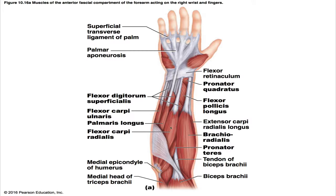The flexor carpi radialis runs diagonally across the forearm; midway, its fleshy belly is replaced by a flat tendon that becomes cord-like at the wrist. Its origin is the medial epicondyle of the humerus, and its insertion is the base of the second and third metacarpals. The insertion tendon provides a guide to the position of the radial artery, which is useful when taking a pulse or obtaining an arterial blood gas — you go lateral to that tendon. Its prime action is powerful wrist flexion; it also abducts the hand and is a weak synergist of elbow flexion. It is innervated by the median nerve.